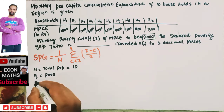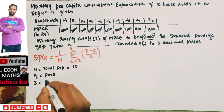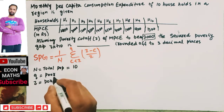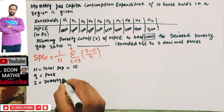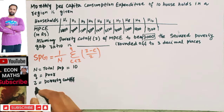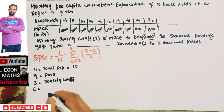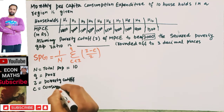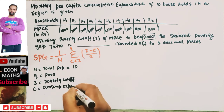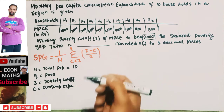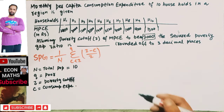z denotes our poverty line — what is written here as poverty cut-off. And c denotes the consumption expenditure of the poor people. Using these definitions, we can now calculate the squared poverty gap.